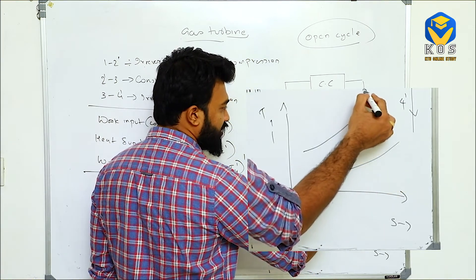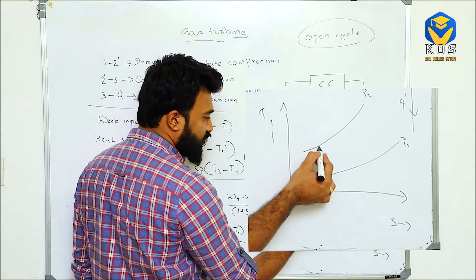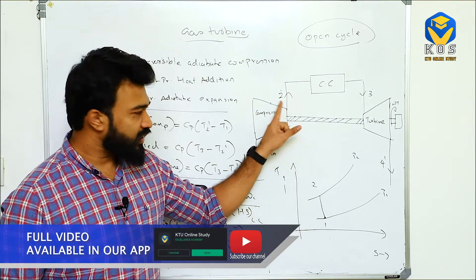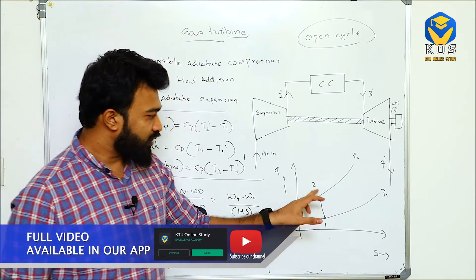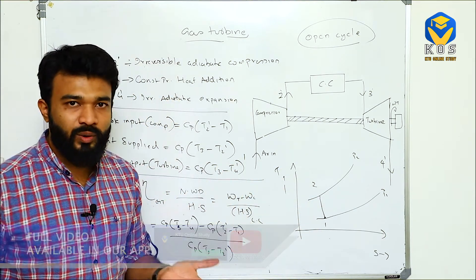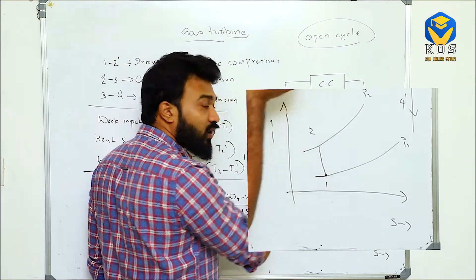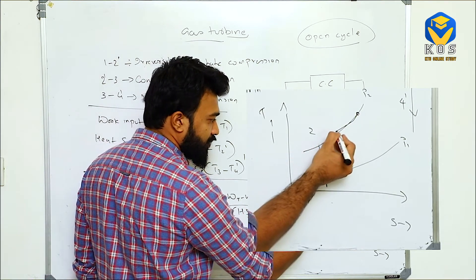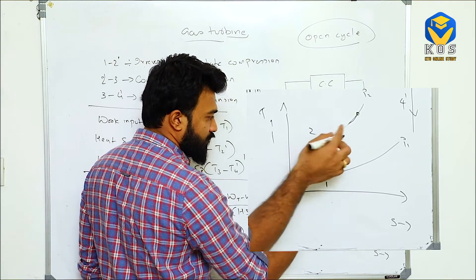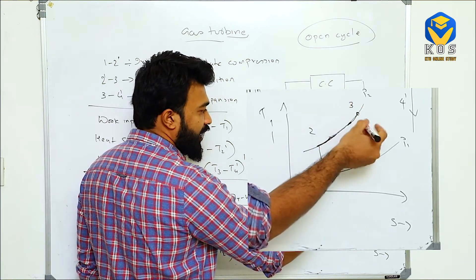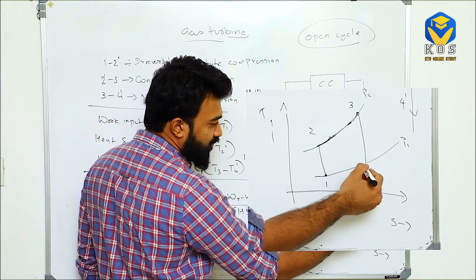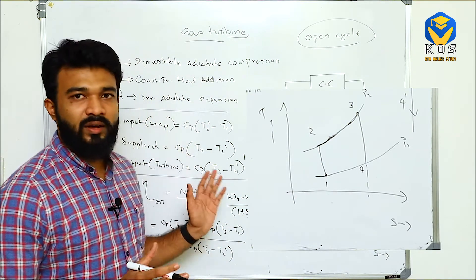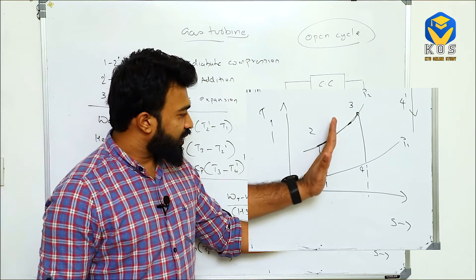On the T-S diagram, the high pressure is P2 and low pressure is P1. Process 1 to 2 in the compressor — if it were a reversible process, entropy would remain the same. From 2 to 3, heat is added at constant pressure. From 3 to 4, if it were a reversible process, this would be an isentropic expansion. That is the ideal cycle, but here we are dealing with the actual cycle.